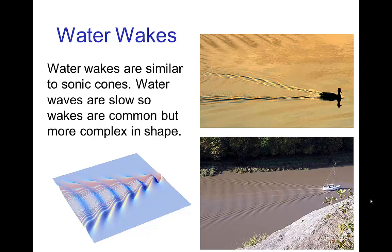Much less dramatic is when an object travels faster than the speed of water waves. Water waves are rather slow, so you don't have to travel very fast to exceed them, and you see the same type of cone forming in the wake. The interaction is a little more complicated, but it's still a characteristic cone, and the angle of that cone is established by the speed of the moving object — the slower it is, the larger the angle of the cone.